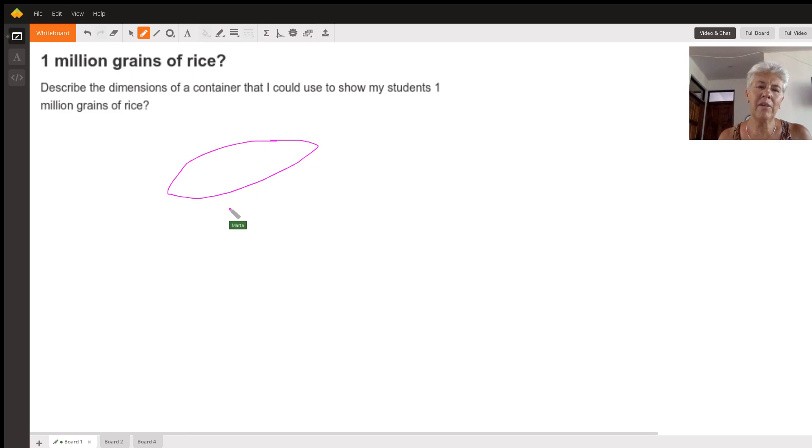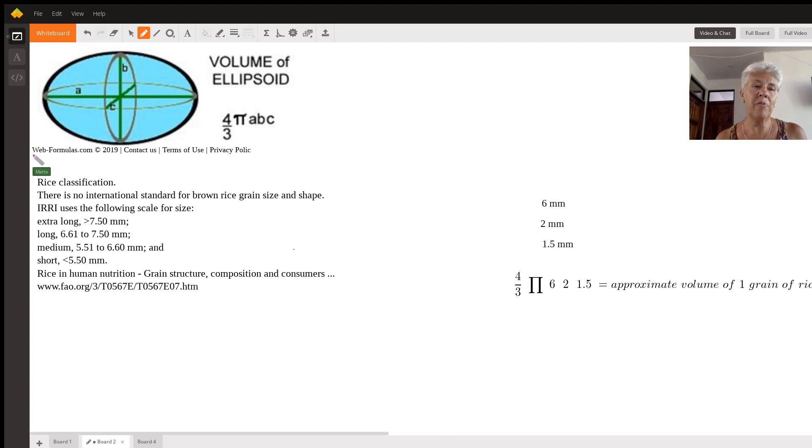So if I think about an ellipse and I think about as a math teacher what I would use to describe the volume of one grain of rice so that I can figure out what the volume of a million grains of rice is going to be, I started digging around on the web and I found this lovely graphic from webformulas.com. Copyright 2019, got it off the web today which is March 26th and they give us the volume of the ellipsoid as four thirds times pi times a times b times c where a is the length of an average grain of rice in our case and so what's that going to be?